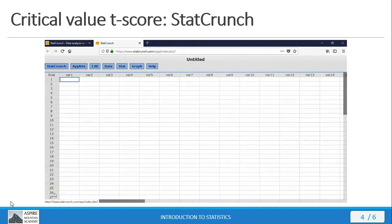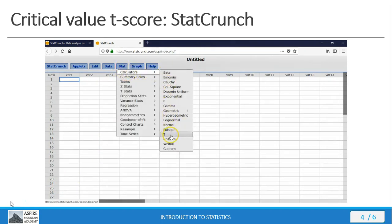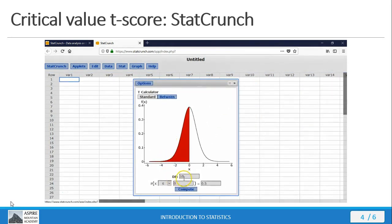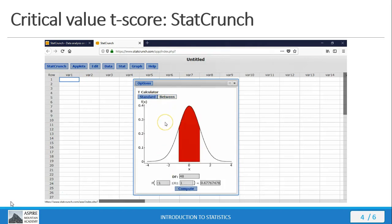Here in StatCrunch, I'm going to show you how to get your critical value t-scores. To do that, I'm going to get the t-calculator out. Go to stat, calculators, t. Here's my t-calculator. Remember our degrees of freedom that we saw earlier is 48. Then I'm going to hit the between section because we're looking for t-alpha over 2. We're split between two tails. The area between the two tails is my confidence level, which is 95%. Put that in, hit compute.